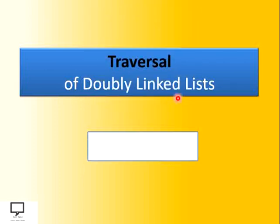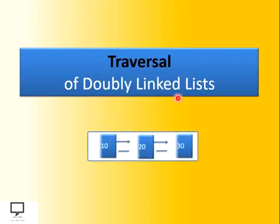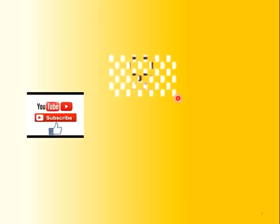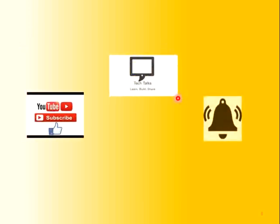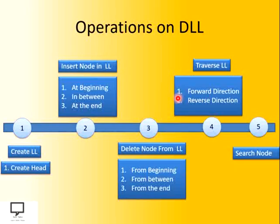A doubly linked list can be traversed in forward direction as well as in reverse direction. Both things we will cover in this video session. Before moving to the content, I would like to request you to subscribe to my channel Tech Talks and keep the bell ringing.